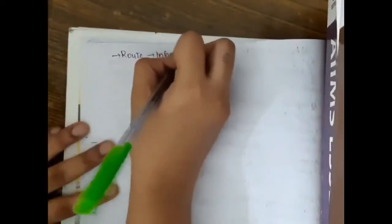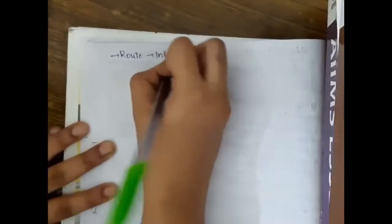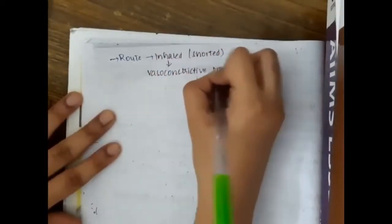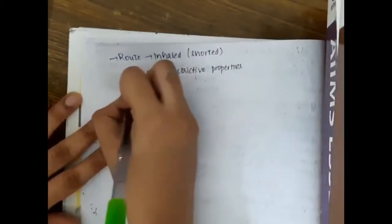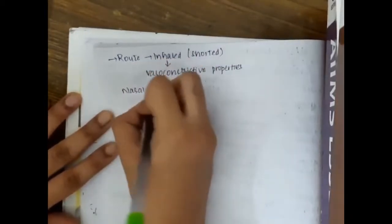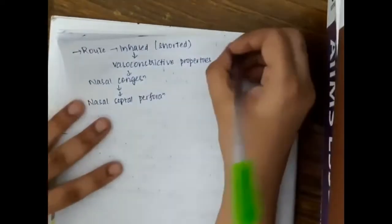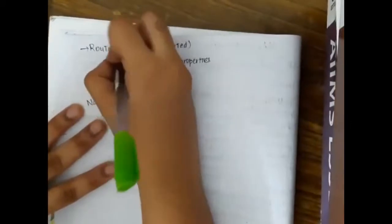If you see the route, cocaine is first inhaled, that is snorted. Because it is snorted, it has vasoconstrictive properties which will lead to nasal congestion and finally causes nasal septal perforation.